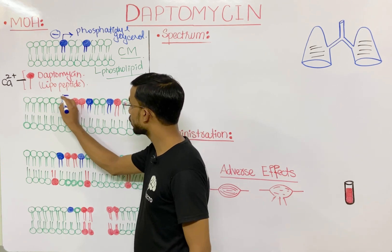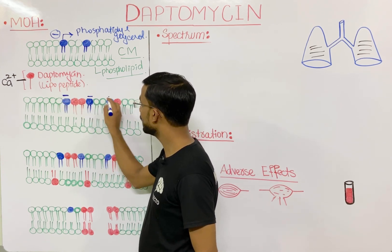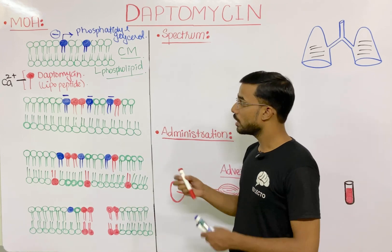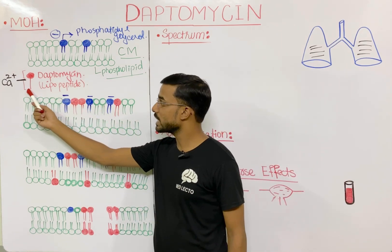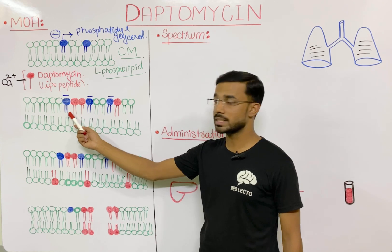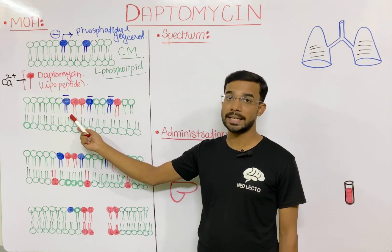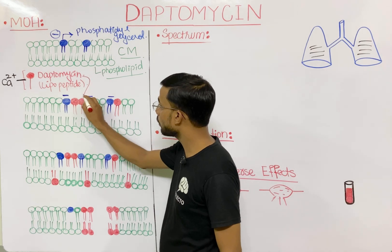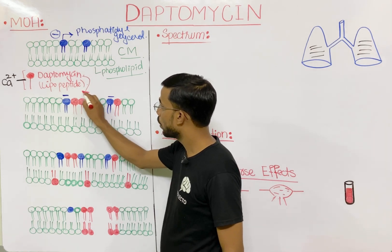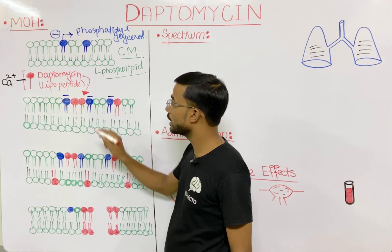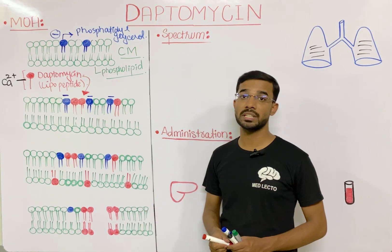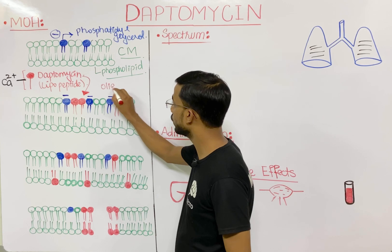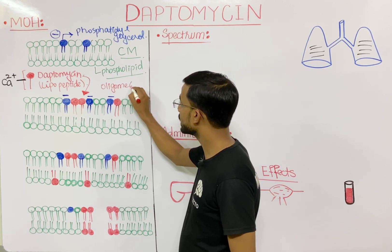Since phosphatidylglycerol carries a negative charge in the membrane, the positively charged daptomycin-calcium complex will move towards the negatively charged phosphatidylglycerol. Ultimately, the daptomycin complex moves towards phosphatidylglycerol and you will see the process of oligomerization.